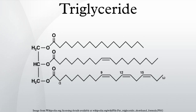Triglycerides are subsequently moved to absorptive enterocyte cells lining the intestines. The triglycerides are rebuilt in the enterocytes from their fragments and packaged together with cholesterol and proteins to form chylomicrons. These are excreted from the cells and collected by the lymph system and transported to the large vessels near the heart before being mixed in the blood. Various tissues can capture the chylomicrons, releasing the triglycerides to be used as a source of energy. Fat and liver cells can synthesize and store triglycerides. When the body requires fatty acids as an energy source, the hormone glucagon signals the breakdown of the triglycerides by hormone-sensitive lipase to release free fatty acids.